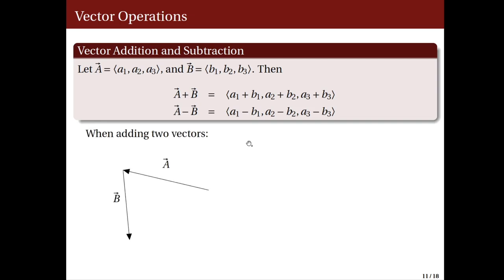Visually, we can represent the sum of two vectors using the triangle method. Given vectors a and b, we position b such that its initial point coincides with the terminal point of a. Then the resulting vector a + b has its initial point at the initial point of a and its terminal point at the terminal point of b.